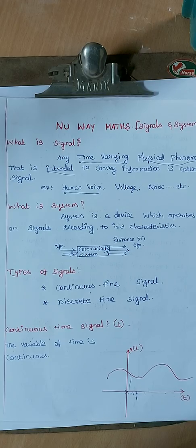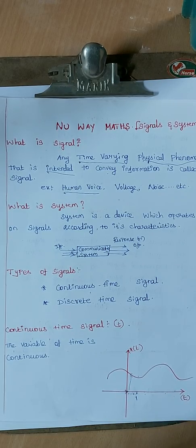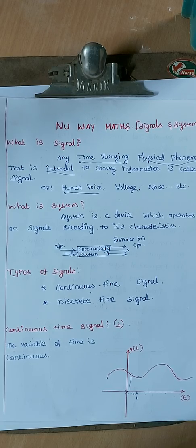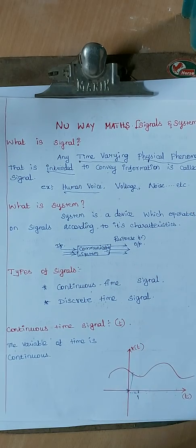Noise is also a signal. Why is noise a signal? If you want to convey some information and the message comes to your friend but it is junk, that means they received unwanted content — that is noise. But noise is still a signal, just an unwanted one.